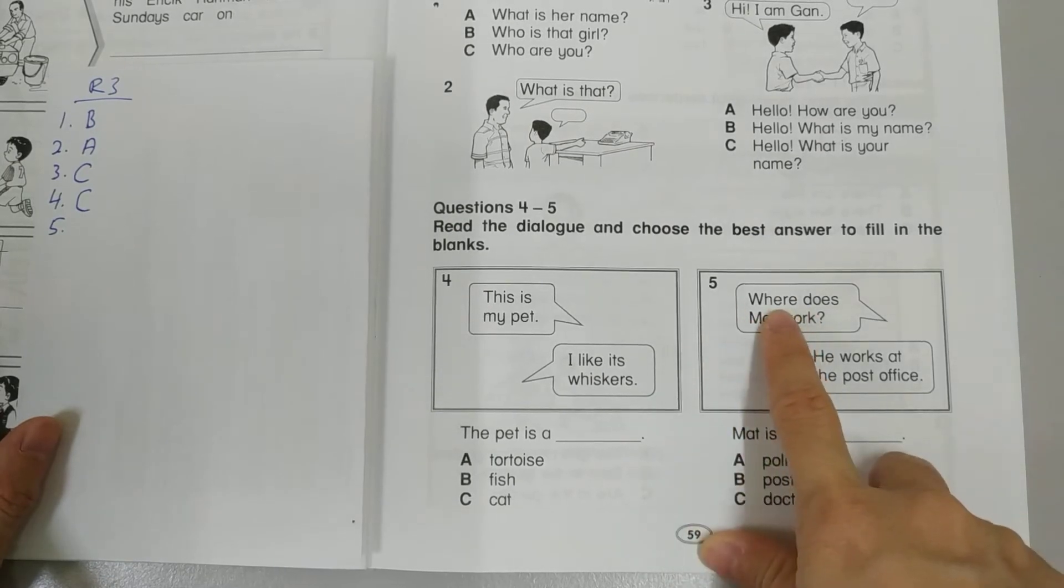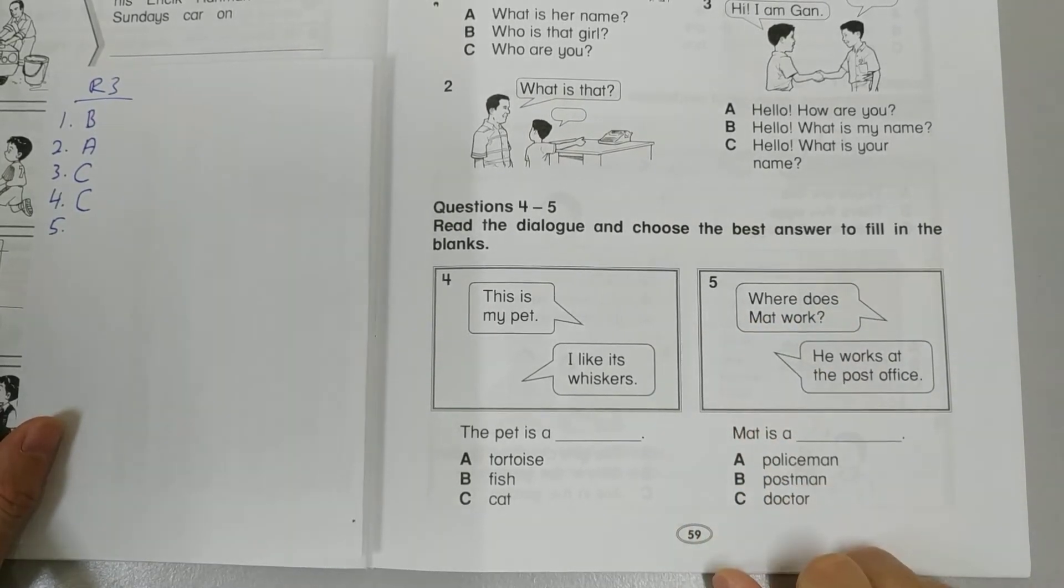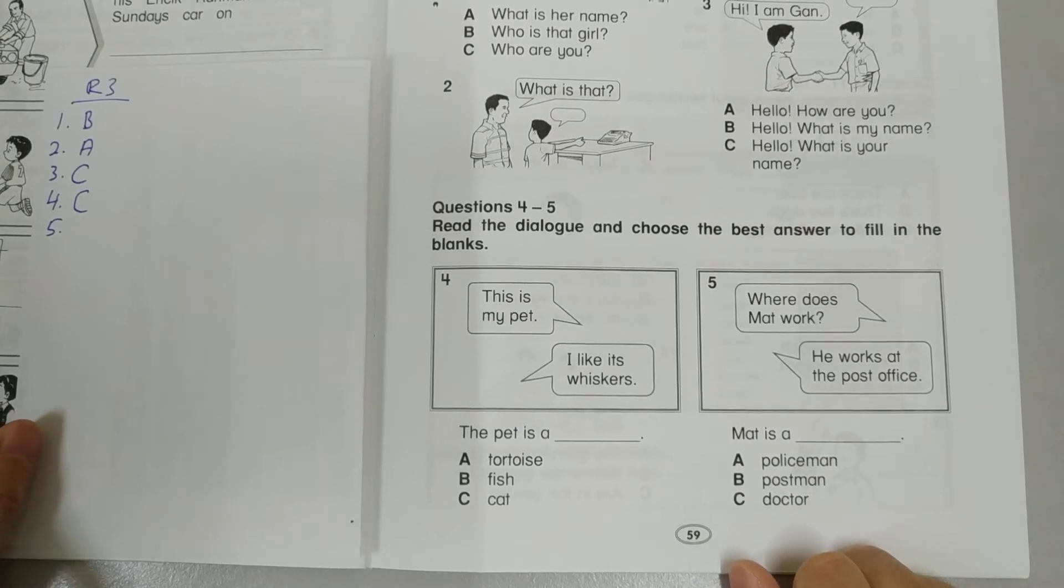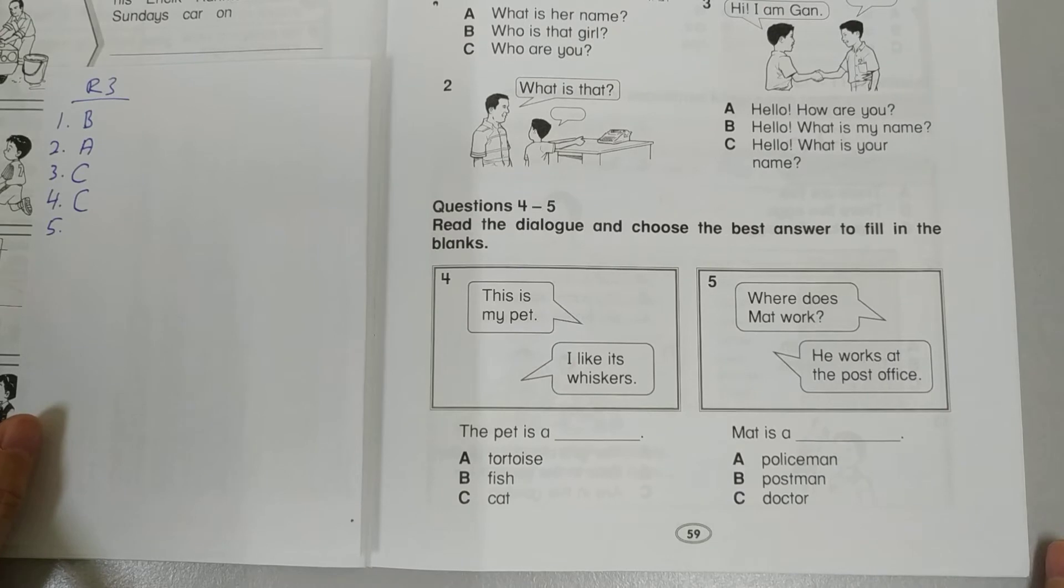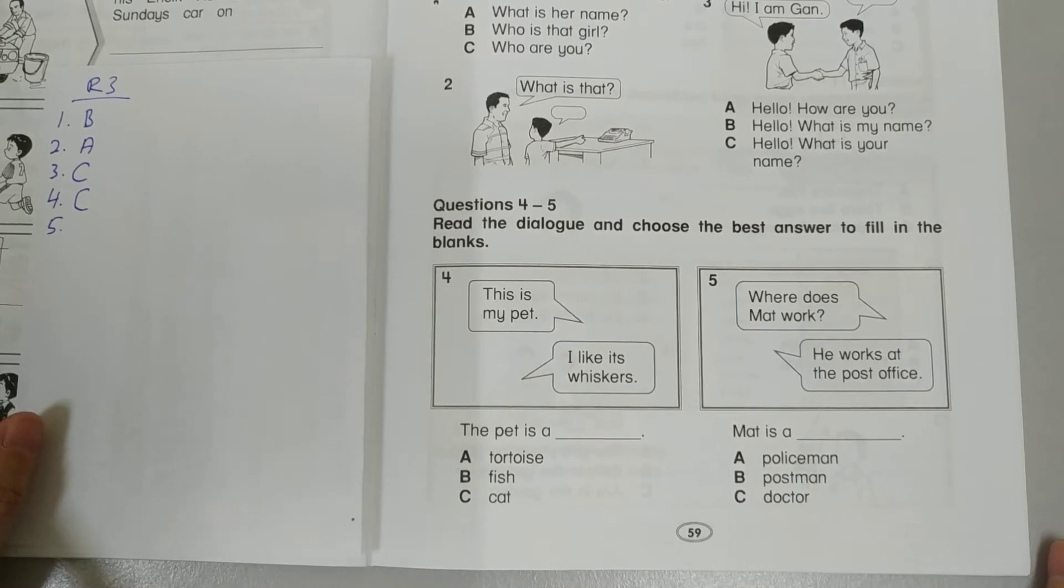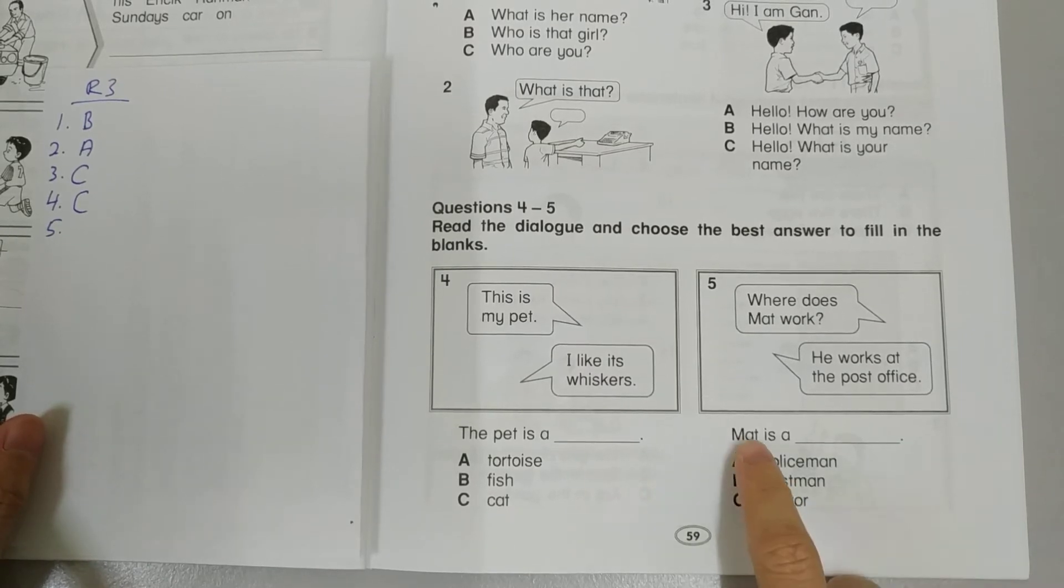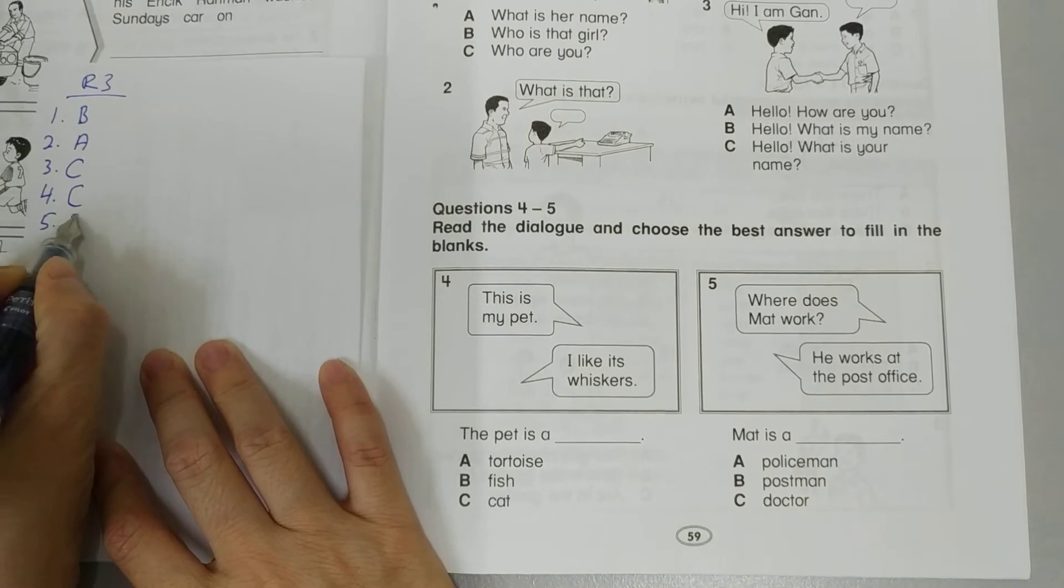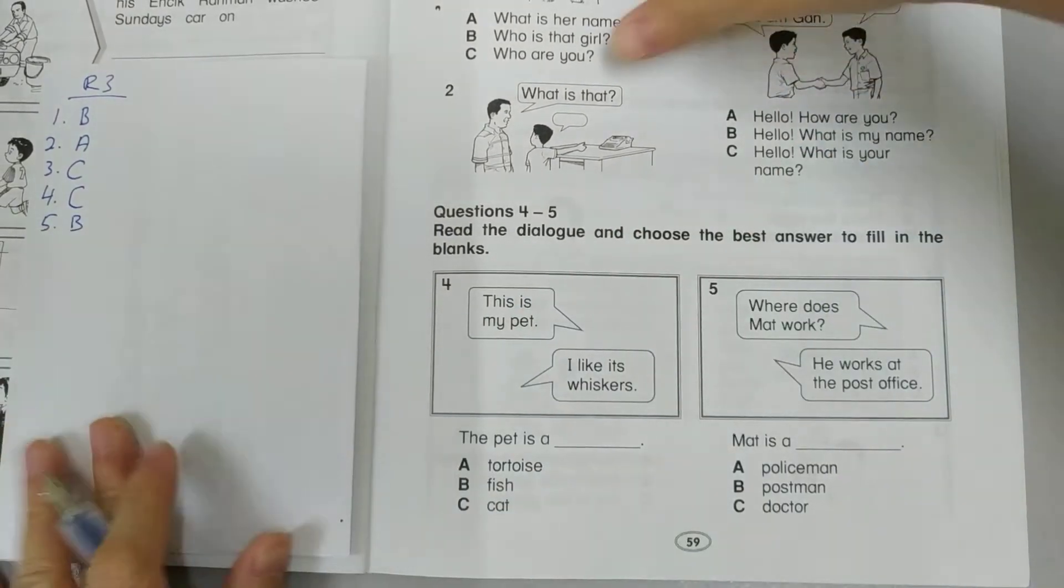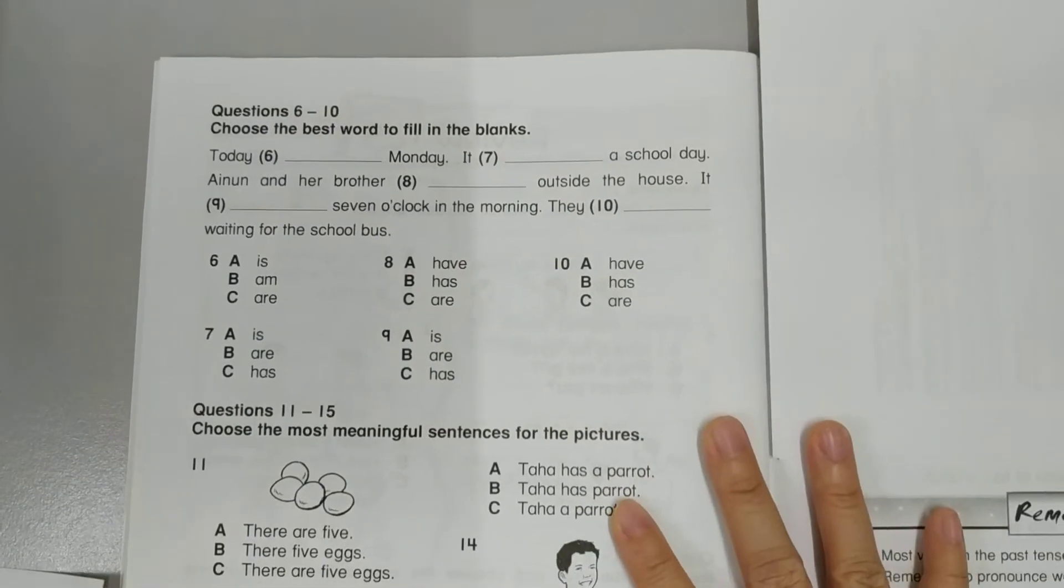Okay, number 5. Where does Matt work? I guess. He works at the post office. So who works at the post office? Is it a policeman, postman or a doctor? Of course, Matt is a postman. Very noble job. Especially now.